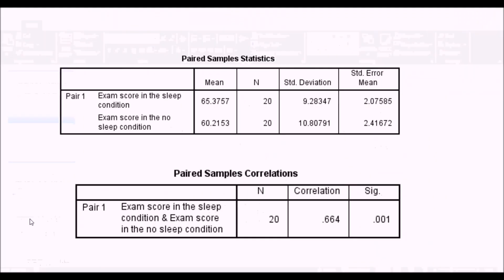If we get the output up, what we'll do first of all, as with last time, is just check the mean scores. We can see that when participants took part in the sleep condition, they were scoring on average 65.38, and when they took part in the no sleep condition, they were scoring a mean of 60.22. So like the example before, it looks like there's a difference in the predicted direction that when participants could get sleep, they were doing better in the exam.